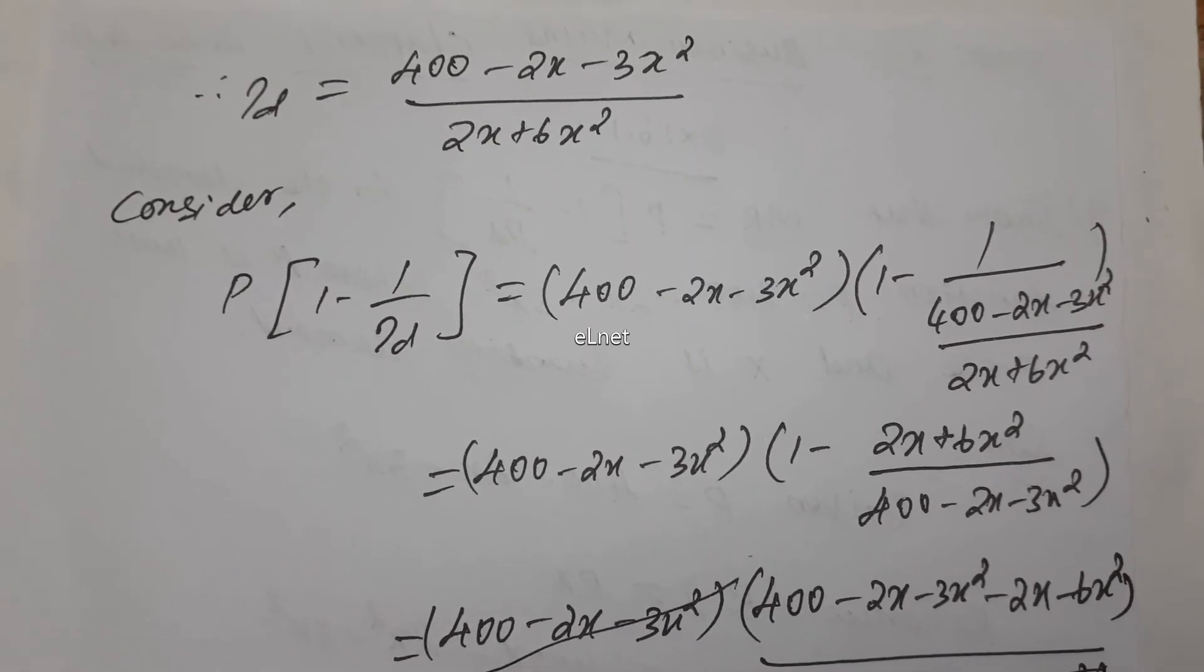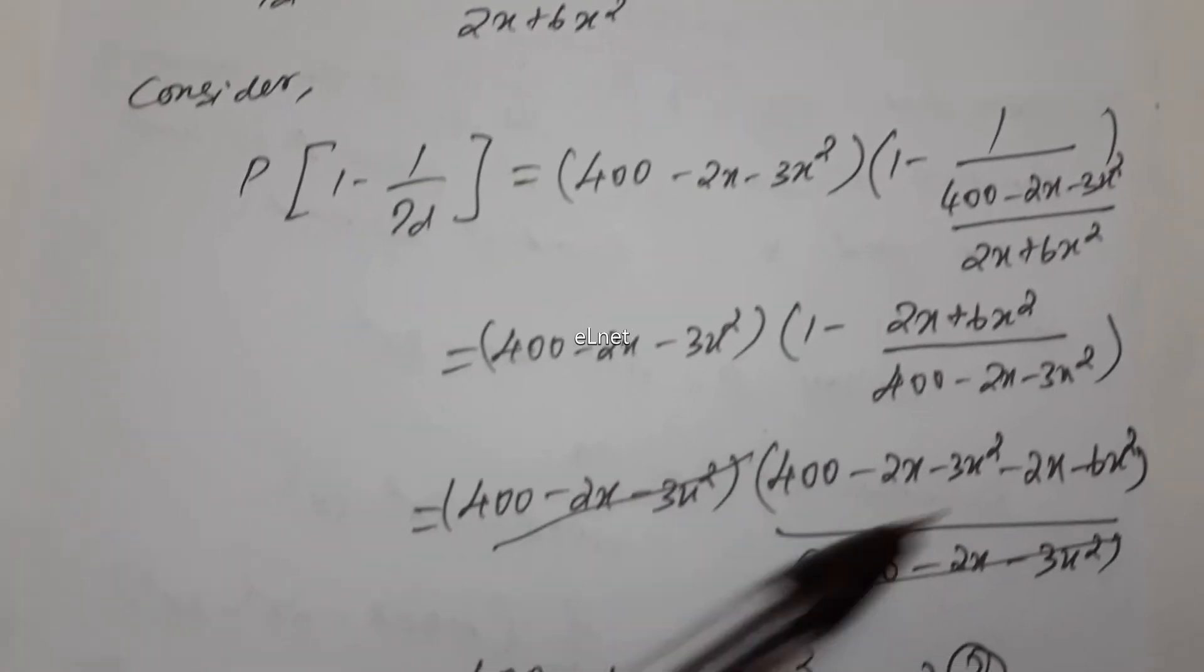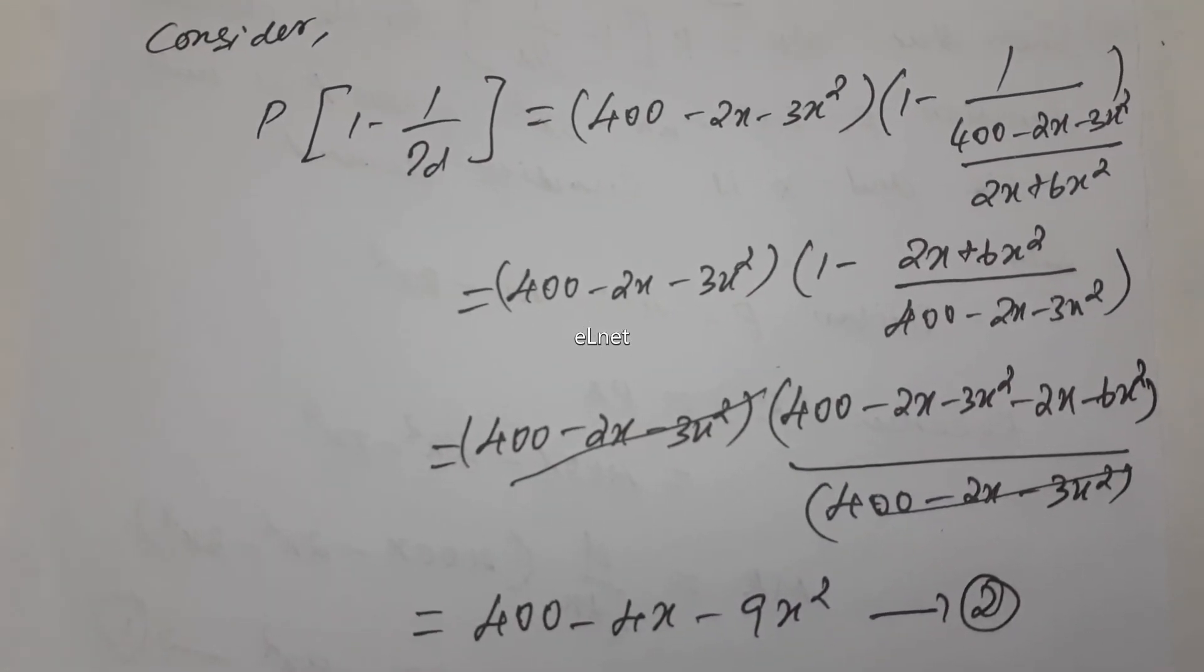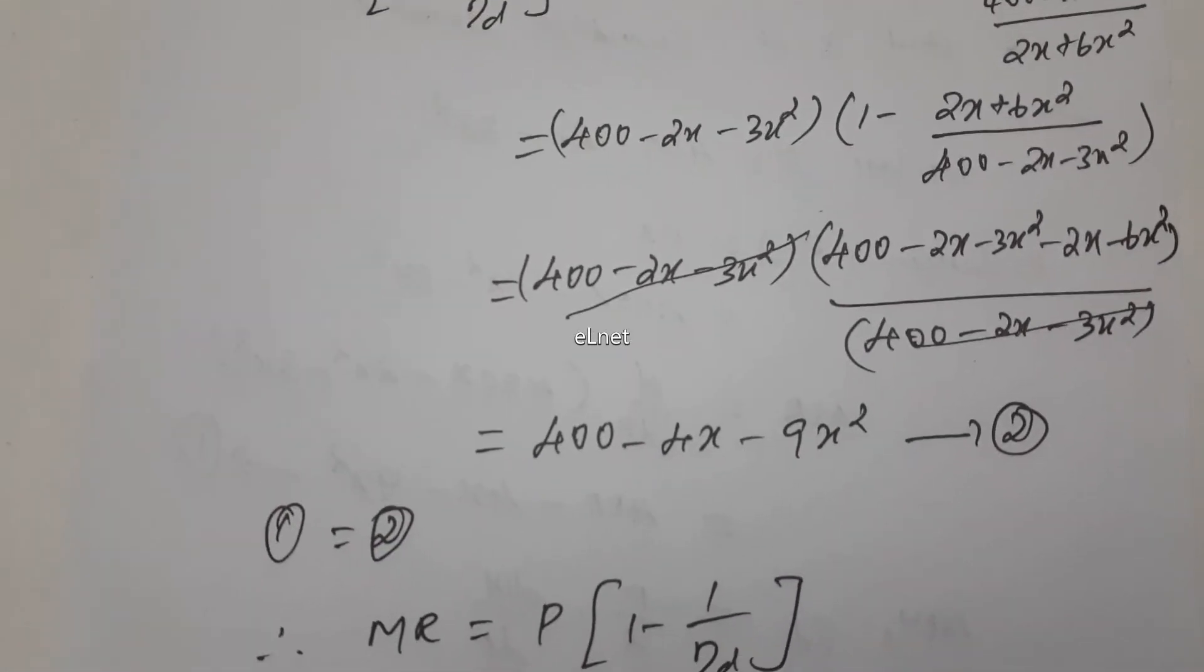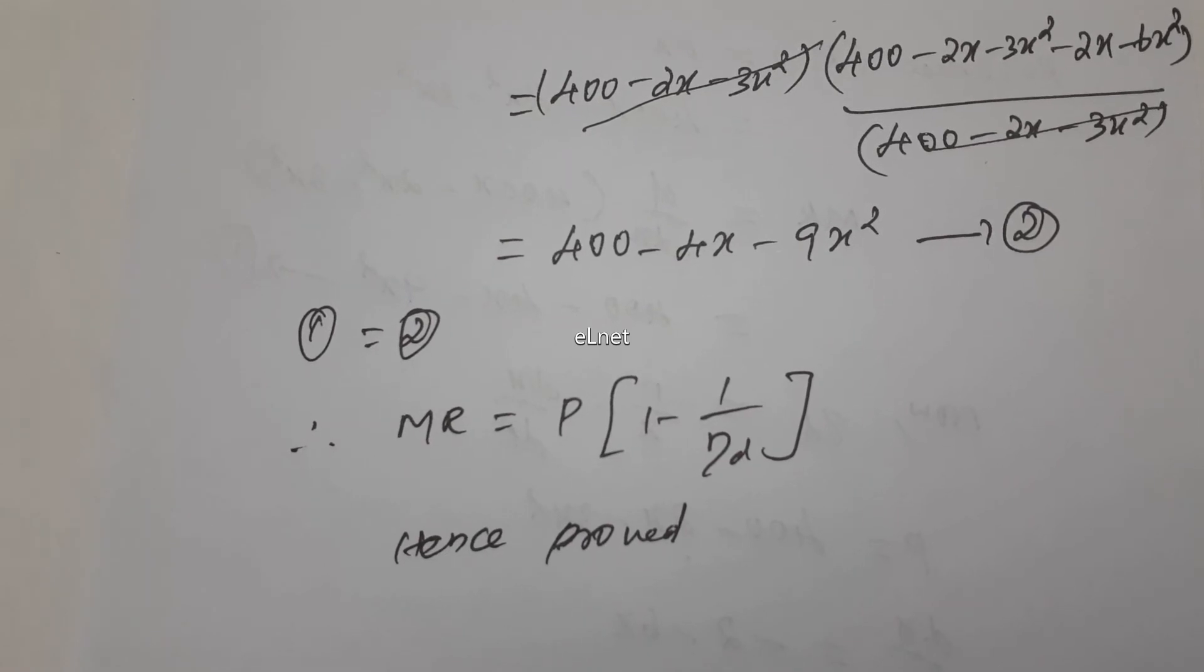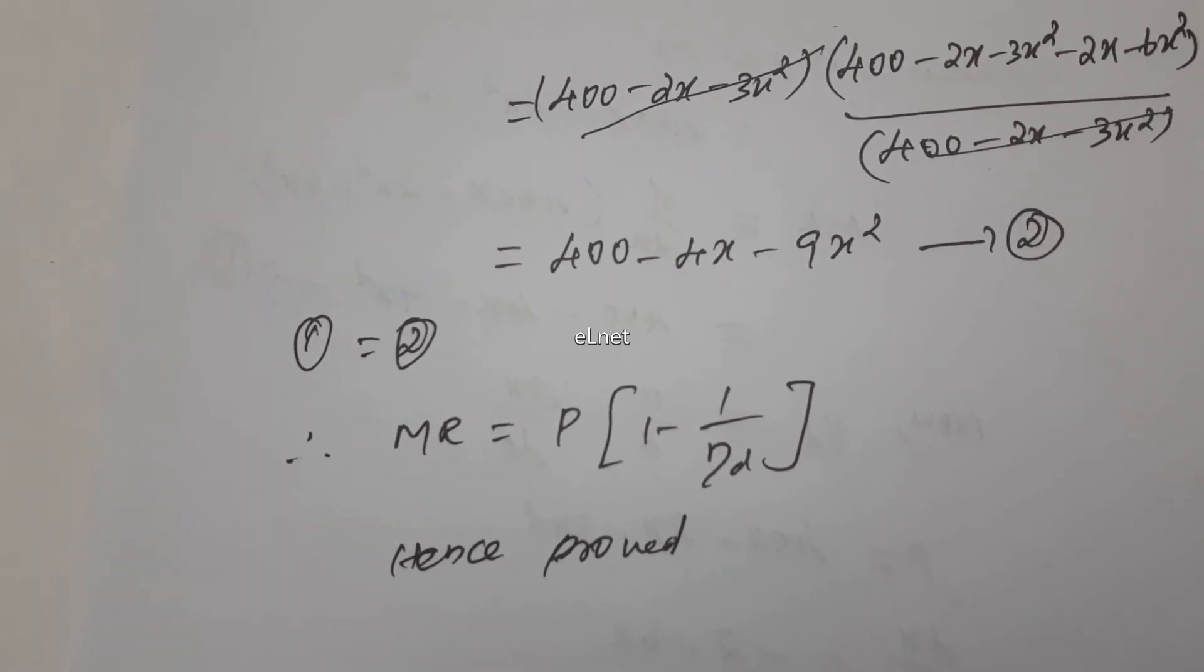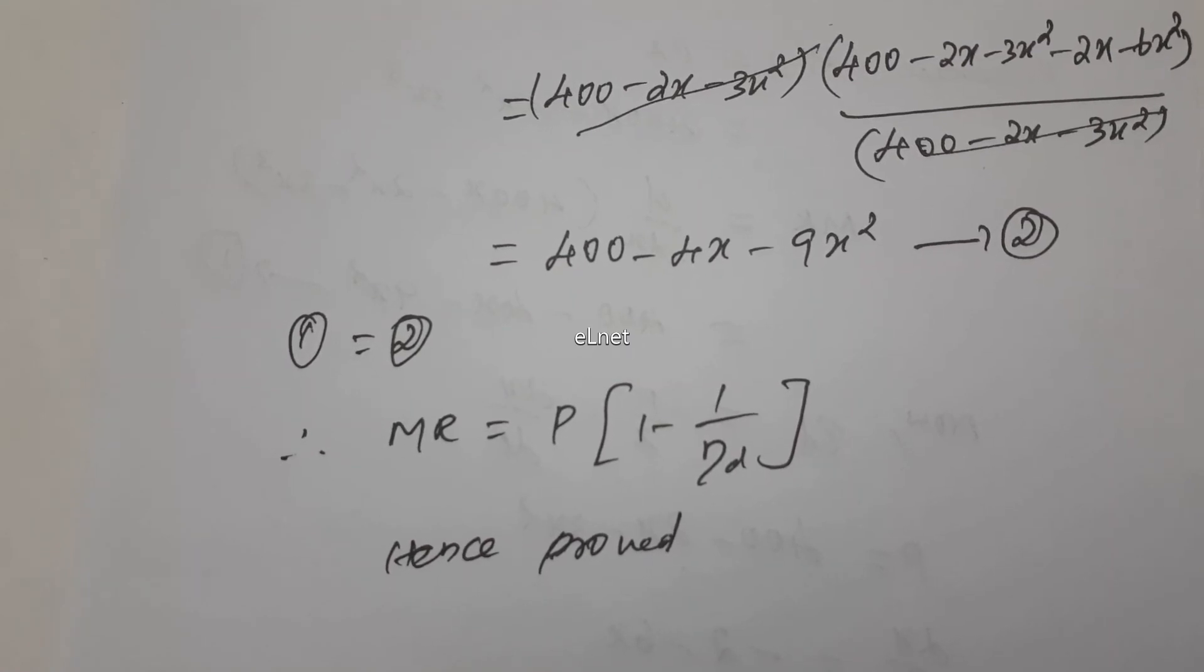When you put 1 by eta D in the fraction, take reciprocal and bring it to the numerator, then multiply with the minus sign. Therefore, the answer is 400 minus 4x minus 9x squared. Equation 1 and equation 2 are equal, hence proved. Okay students, we'll meet in the next class. Thank you students.